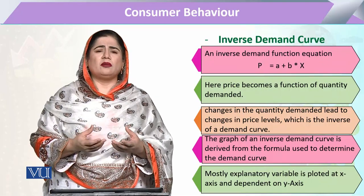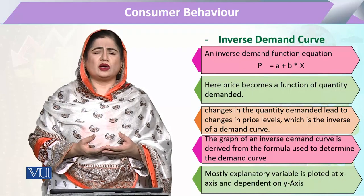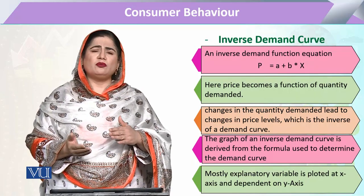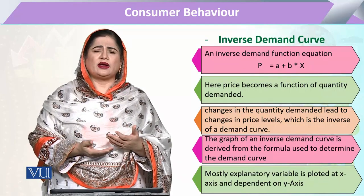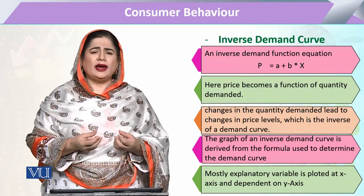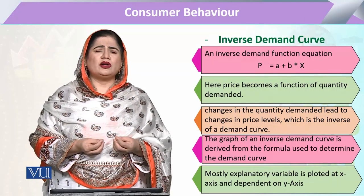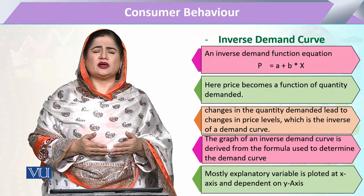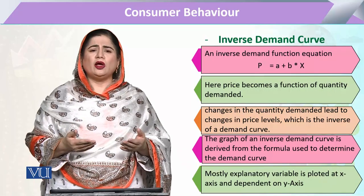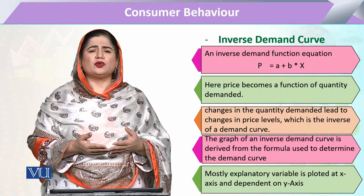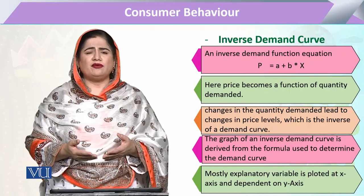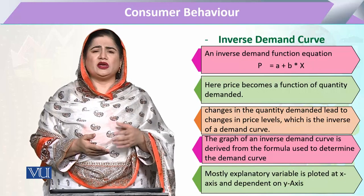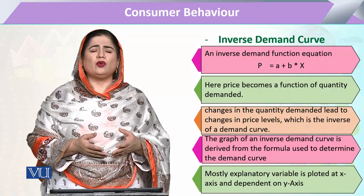جب تک کہ وہ بہت بڑا نہ ہو — جیسے کہ صرف ایک ہی صارف ہو جو پوری market کو control کر سکے — وہ ایک exceptional case ہوگا، اور یہ ایک عام صارف کے لیے ممکن نہیں ہے۔ لیکن چونکہ ہم inverse کو mathematically طے کر رہے ہیں، اب quantity بدلے گی اور quantity demanded میں تبدیلی سے اس commodity کی price کا کیا response ہوگا، اس کے لیے ہم price کو vertical axis پر رکھتے ہیں اور quantity demanded کو x-axis پر رکھ کر اس کا relationship draw کرتے ہیں، اور اس relationship کو ہم inverse demand function کہتے ہیں۔